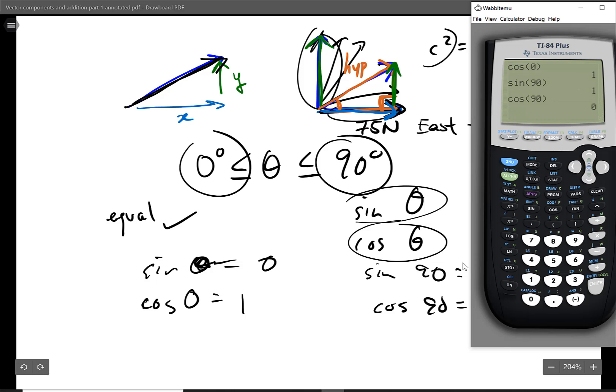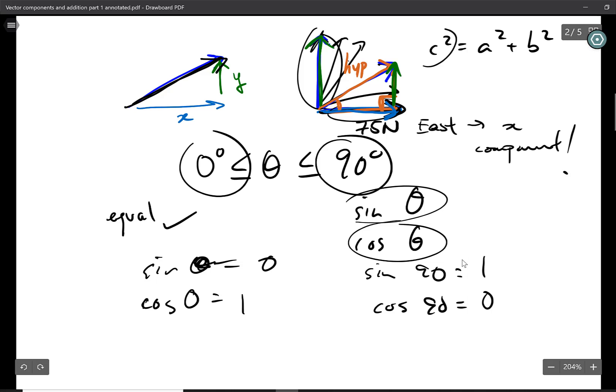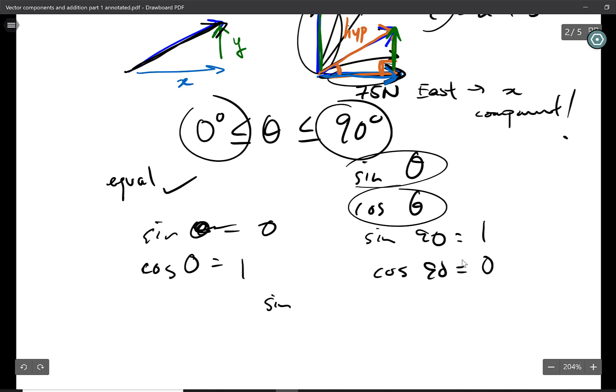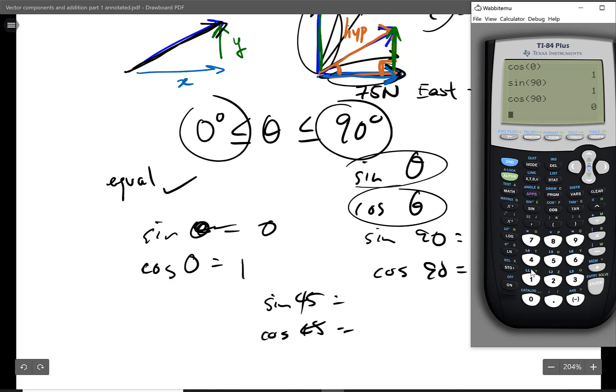But let's check a number in between. I'm going to do, say, 45. Sine 45, cosine 45. Let's see what we get. Cosine 45. Oh, hey, look. This number is smaller than 1. Sine of 45. Hey, it's the same number. Well, surprise, surprise.